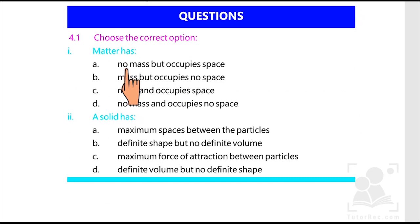The first one says matter has no mass but occupies the space, mass but occupies no space, mass and occupies the space, no mass and occupies no space. C is correct. So let's highlight. Matter has mass and occupies the space.